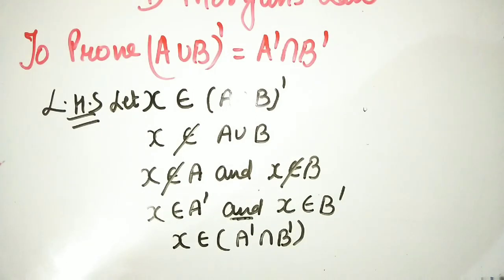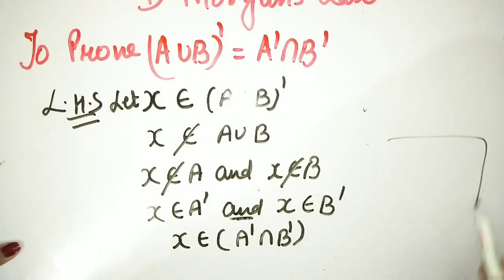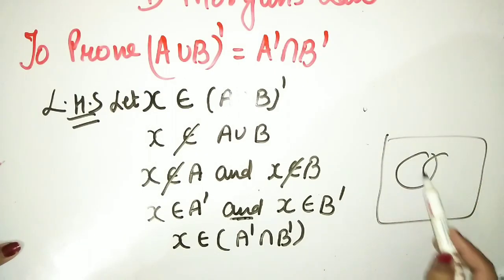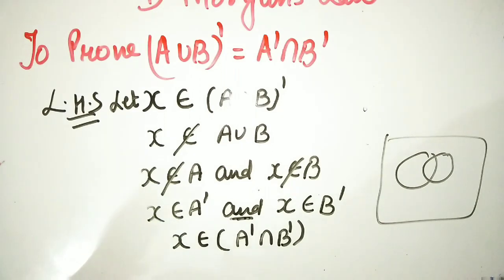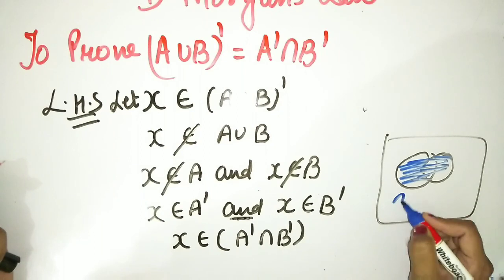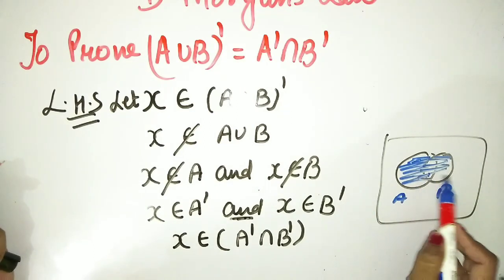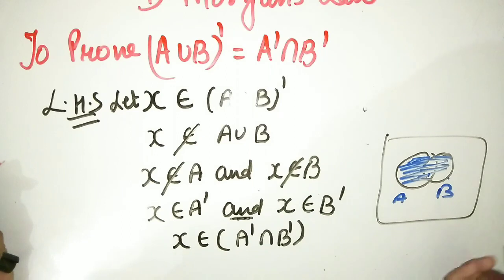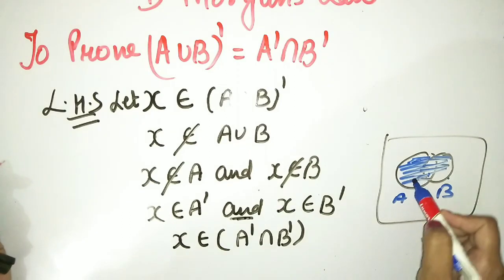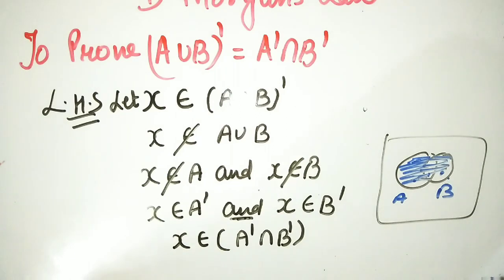Let's make an image in our brain. I have taken sets A and B and their union. This is the full union — this is A, this is B. If my element doesn't belong to A union B, if it doesn't belong to A and B, what happens? It doesn't belong to A and it doesn't belong to B.